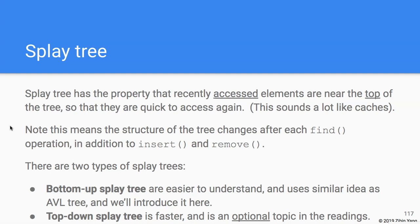An interesting observation is that by 'access' we mean both find and insert — not so much remove. So the structure of the tree changes not only during insert, but also during find. This makes splay trees different from AVL trees in that regard.